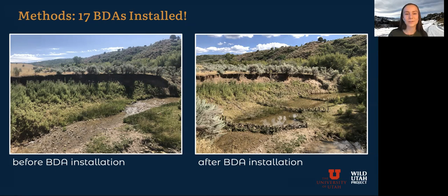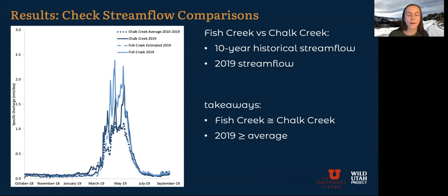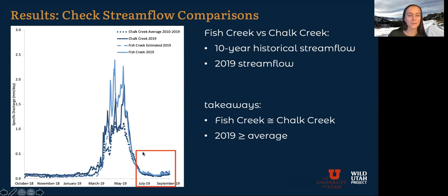To start looking at data now that the dams were installed, I went back to that Chalk Creek data and looked at 10-year historical stream flow from Chalk Creek and 2019 stream flow. The 10-year average is this dotted line, and 2019 for Chalk Creek is the dark blue solid, and 2019 for Fish Creek is the light blue. Fish Creek and Chalk Creek are approximately the same. Fish Creek was a little bit higher stream flow at some points, which could be because there are some diversions along Chalk Creek before the USGS station. But 2019 was also a little bit larger than average at both sites.